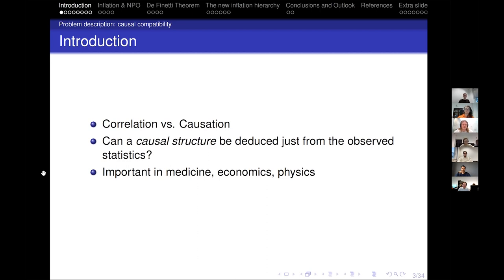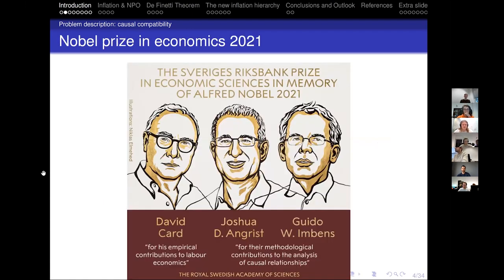This is important in many fields of study — in particular, medicine, economics, and of course physics. In physics there is the well-known example of Bell tests where causality is important. Also this year, half of the Nobel Prize in economics went to Angrist and Imbens for their methodological contributions to the analysis of causal relationships. They looked at slightly different things than we did, but it signifies that people care about causal relations.